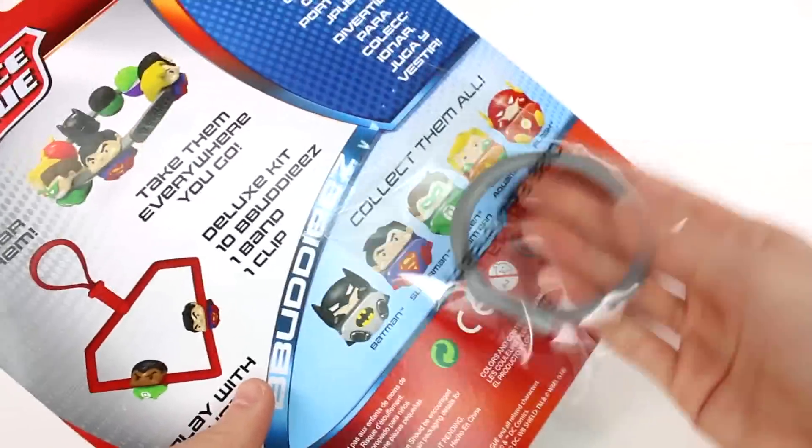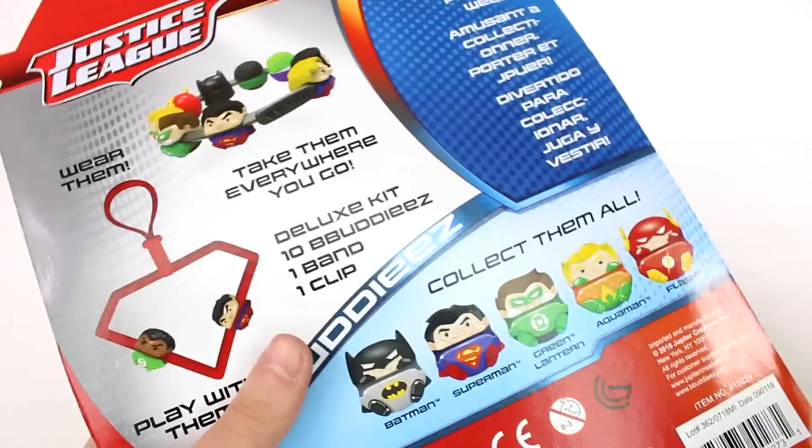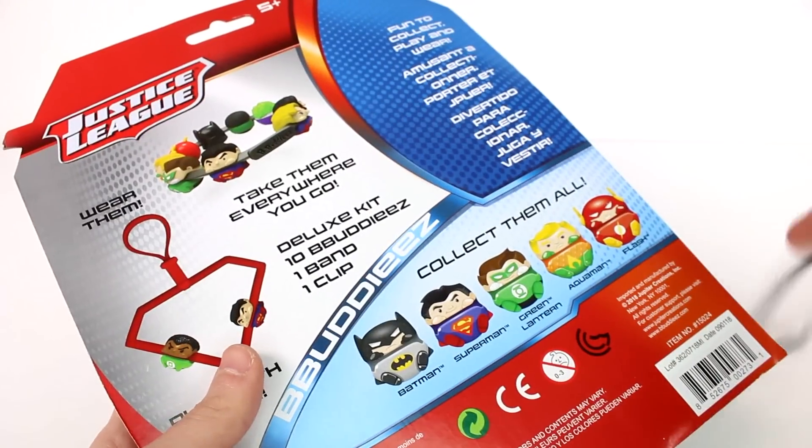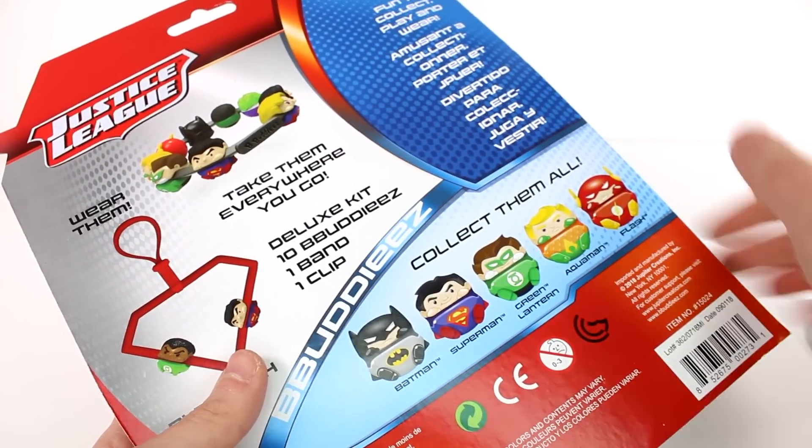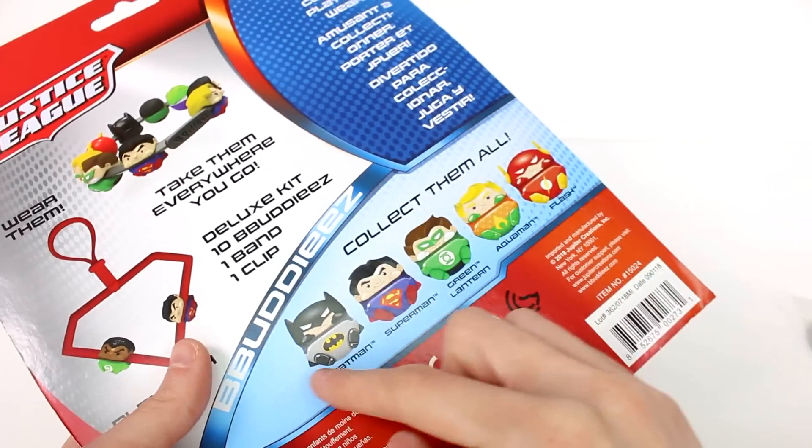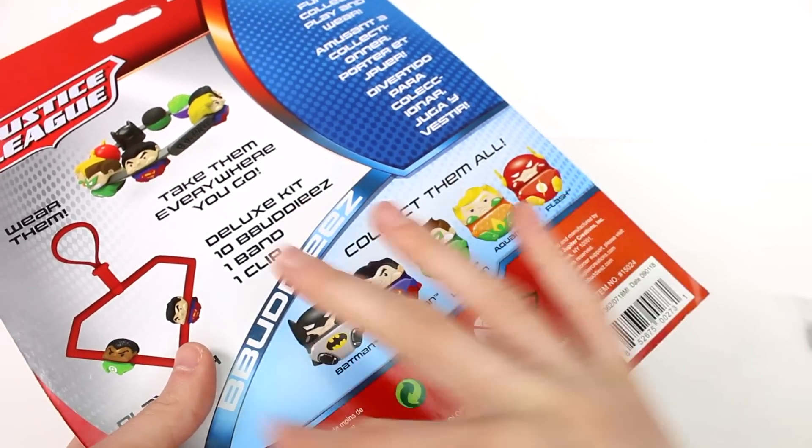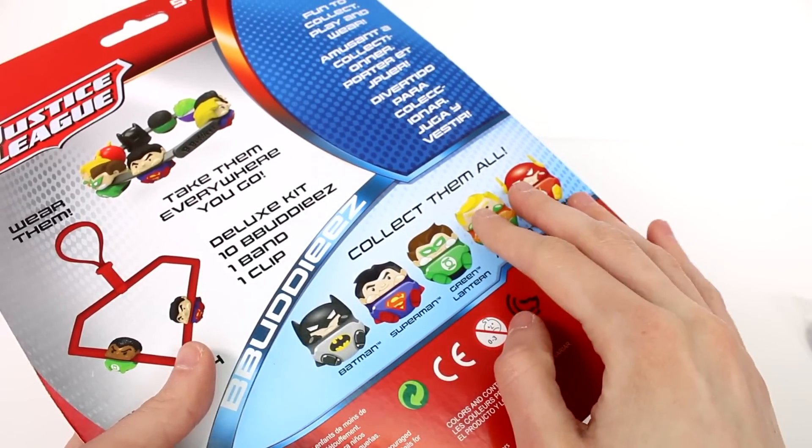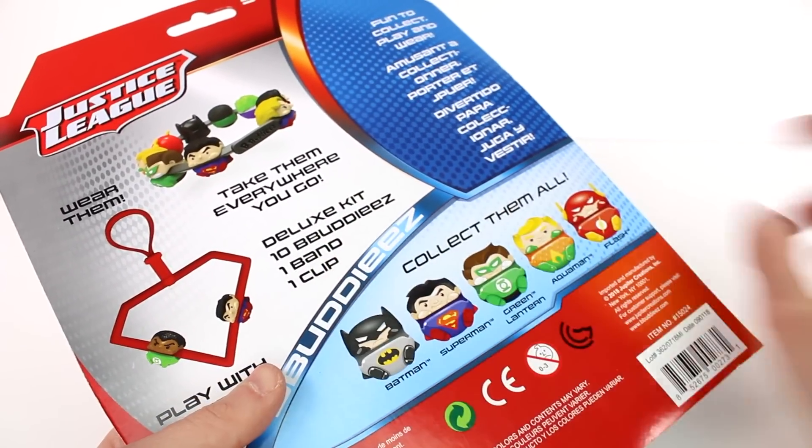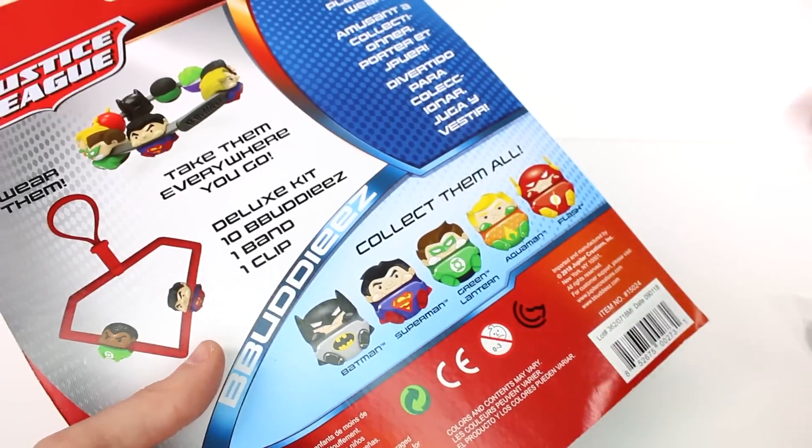I wanted to quickly show you guys that on the back we got a free extra band with the Deluxe Kit. And you can use these because you could wear them and take them where you want to go. And then here's just a few examples of some of the friends we can find inside. There are 10 B Buddies, one band and one clip, or two bands. Technically there's a free one on the back, which is pretty cool.